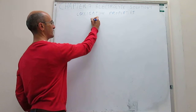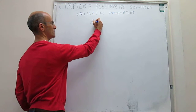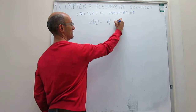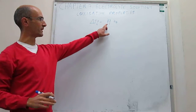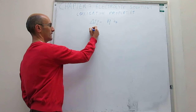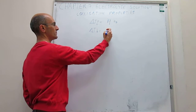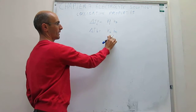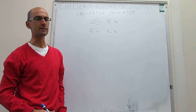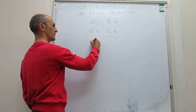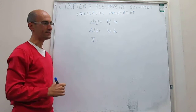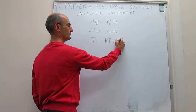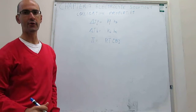To recall what we did with non-electrolyte solutions: the decrease in the freezing point was directly proportional to the molality of the solution, and the proportionality constant was the cryoscopic constant. The change in the boiling point — a boiling point elevation — was also proportional to the molality of the solution through a constant called the ebullioscopic constant of the solvent. Finally, the osmotic pressure was directly proportional to the molality of the solution, with the proportionality constant being R times temperature.